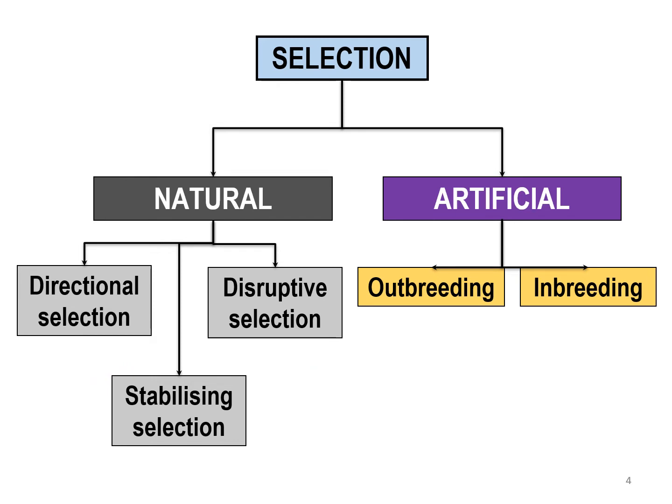Selection can be divided into two types: it can occur naturally or we can do artificial selection. For natural selection, there are three types: directional selection, disruptive selection, and stabilising selection. For artificial selection, there are two types: outbreeding and inbreeding.